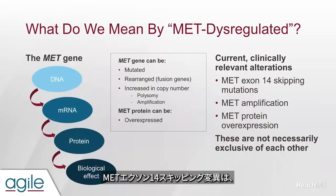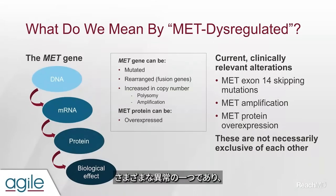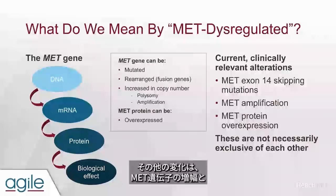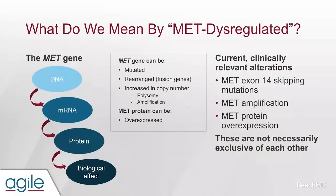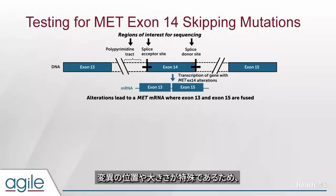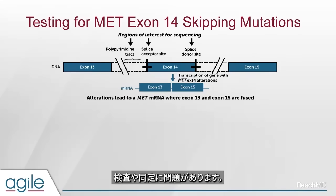Let's get started with detecting MET gene aberrations. Dr. Kerr, can you please give us a brief overview of testing considerations for MET exon-14 skipping mutations? MET exon-14 skipping mutations are one of a number of different aberrations that we can find in non-small cell lung cancers which may have clinical relevance. The other alterations are MET gene amplification and overexpression of the protein.